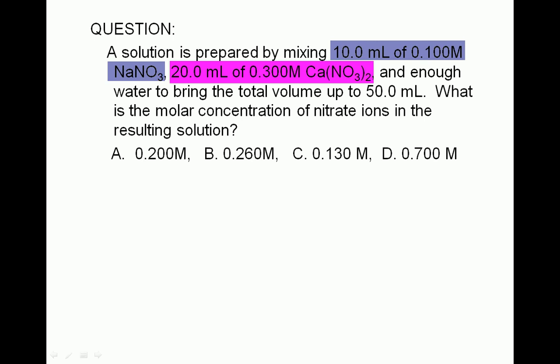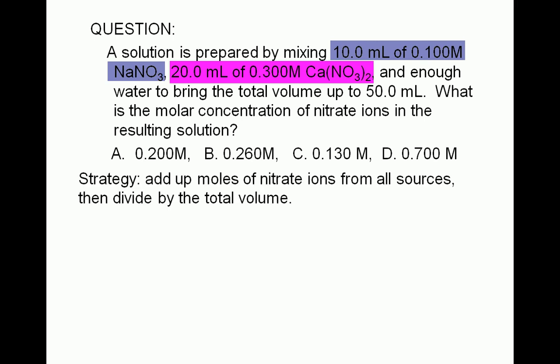Here we are dealing with a final solution that contains more than one compound as solutes. It so happens in this case that the two solutes both have nitrate ions. So if we want to determine the molar concentration of just the nitrate ions, a good strategy to use is to just add up the moles of nitrate ions from both sources and then divide by the total volume.